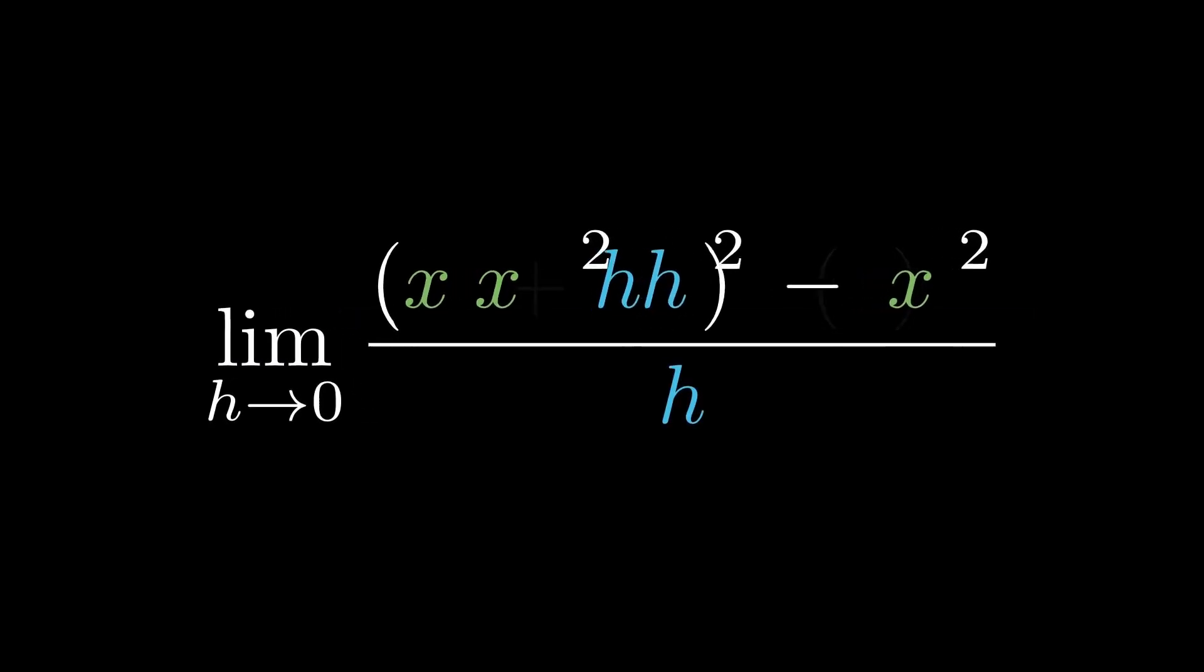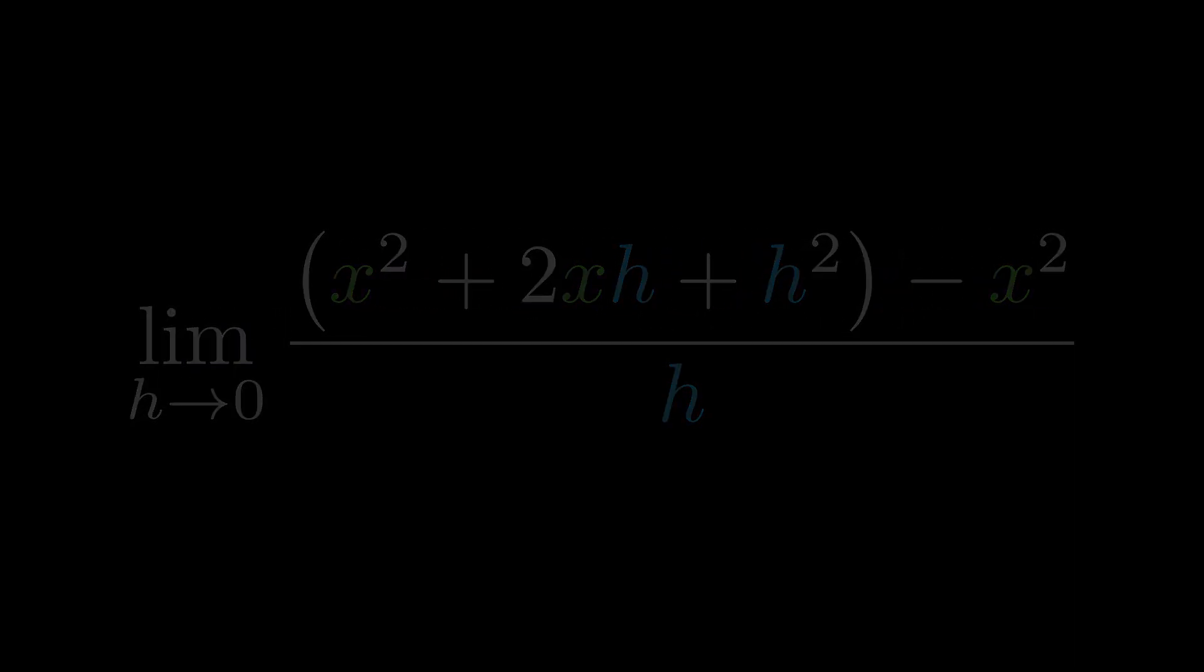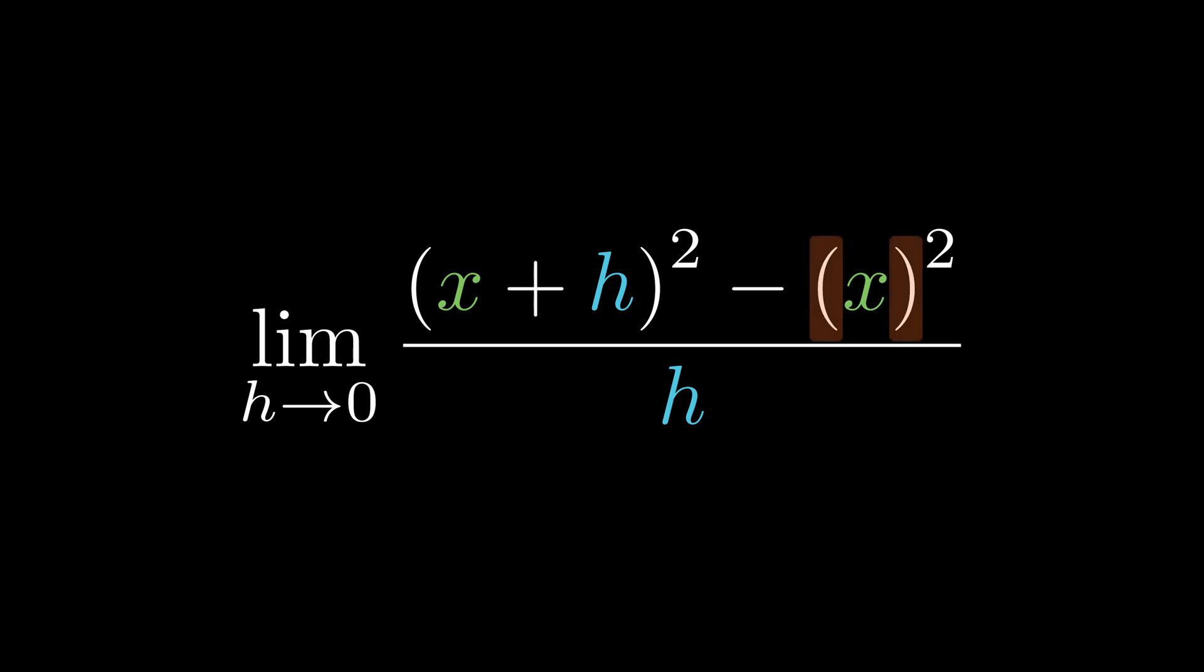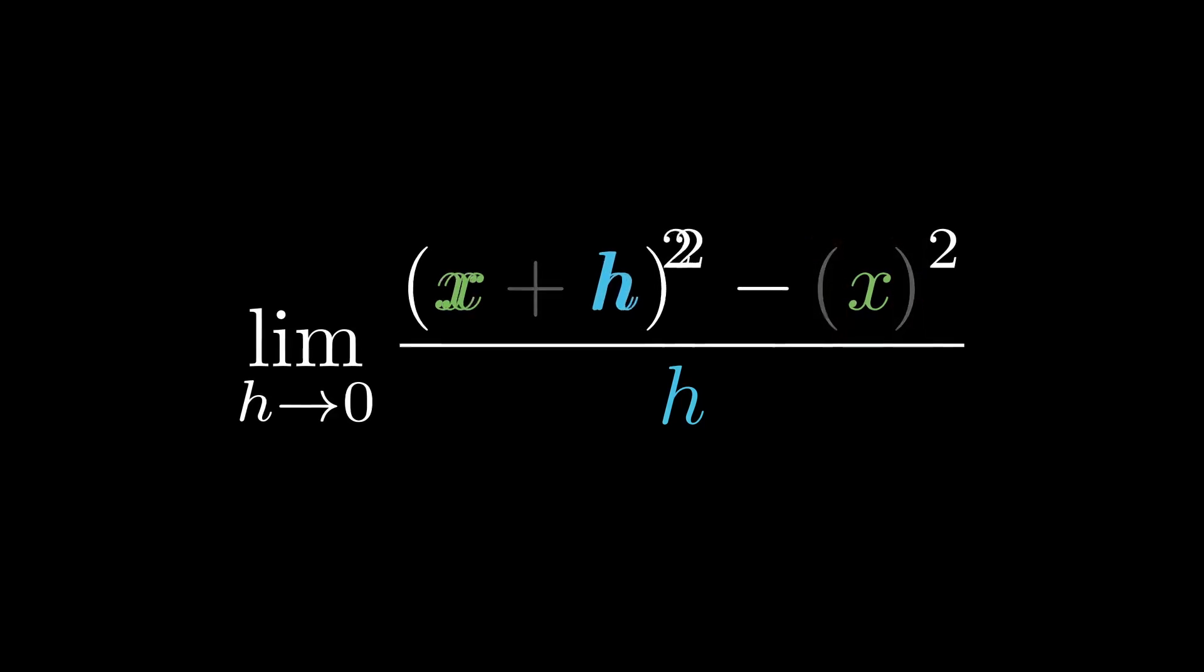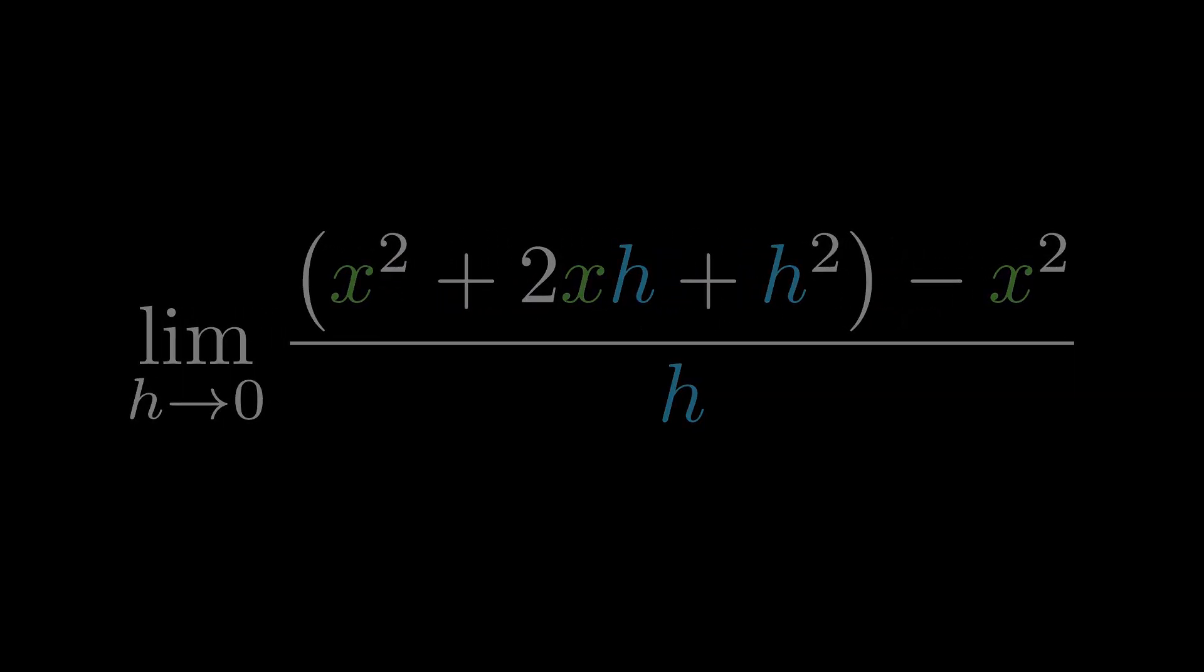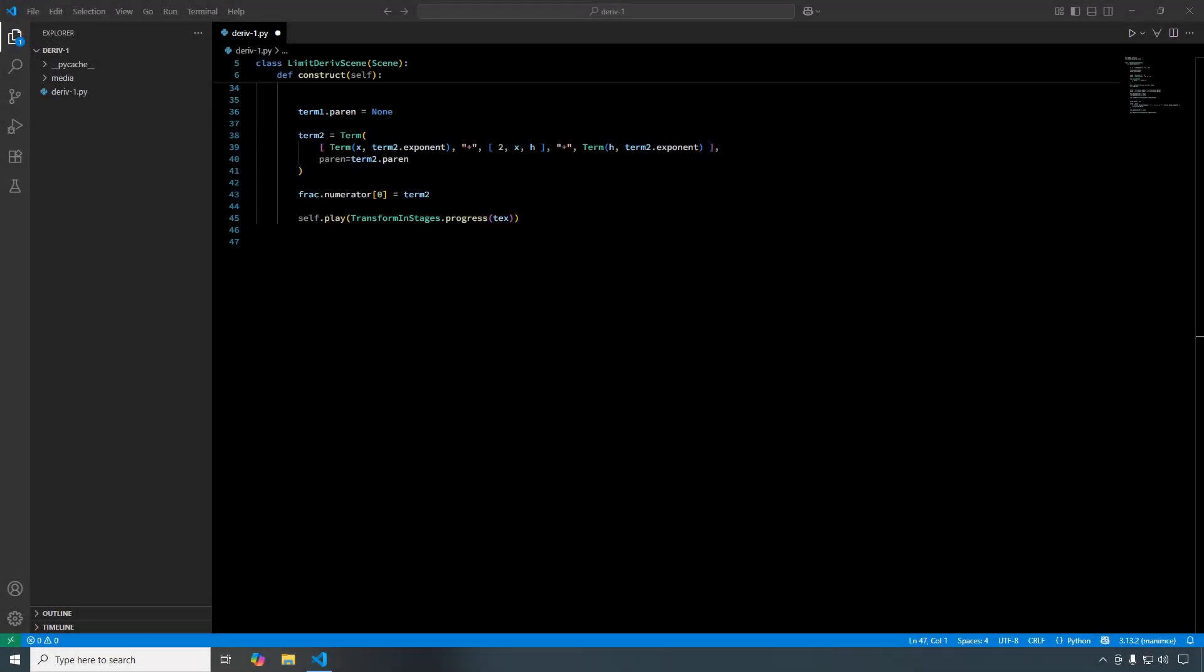Now let's incorporate the binomial expansion. If you look at the parentheses around the x squared, you'll notice they disappear during this step. With term1.paren equals none, we make the parentheses on the x squared disappear. Here, we overwrite x plus h squared with its binomial expansion, expr. And expr is the same as before, except now we use term2 instead of just term. And here is the updated code.